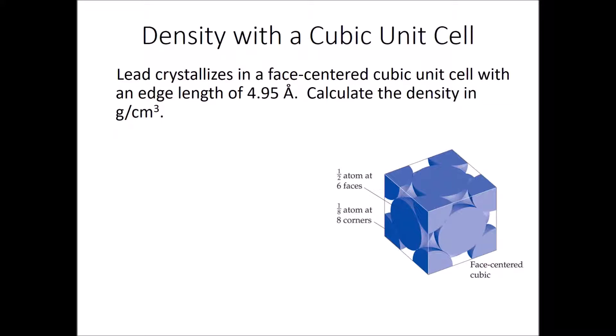This is the problem. Lead crystallizes in a face-centered cubic unit cell with an edge length of 4.95 angstroms. Angstroms is a very small unit of distance. Calculate the density in grams per cubic centimeter.